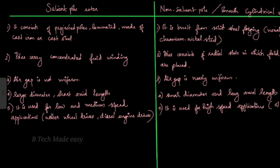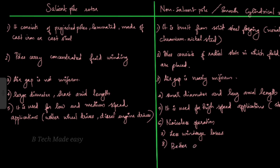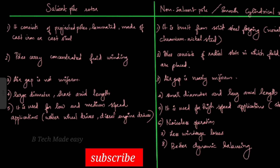The non-salient pole type has several advantages: it provides noiseless operation, there are less leakage losses, and it also offers better dynamic balancing. This completes the comparison between the salient pole and non-salient pole types of alternator rotor.